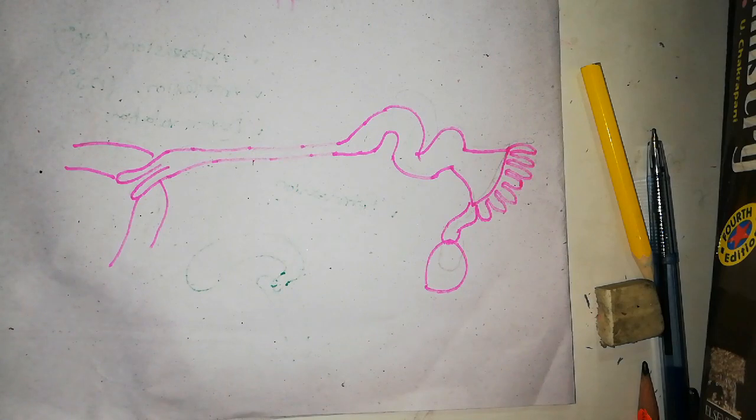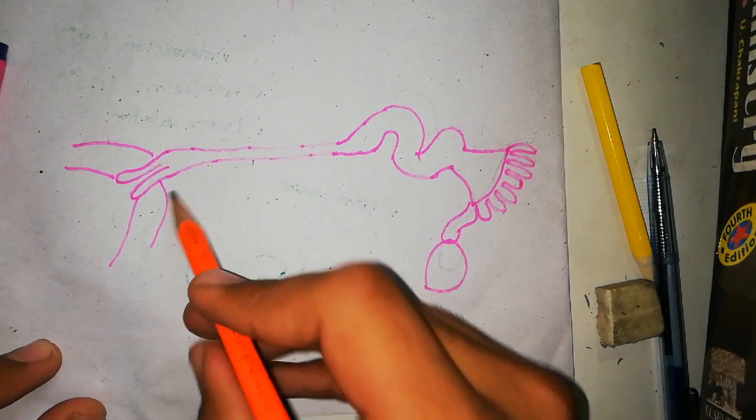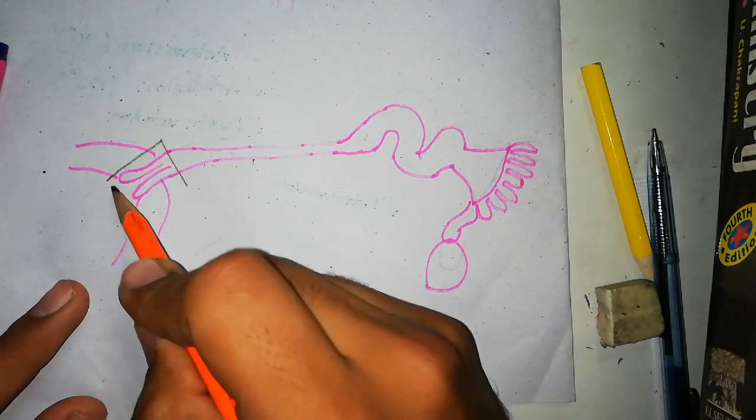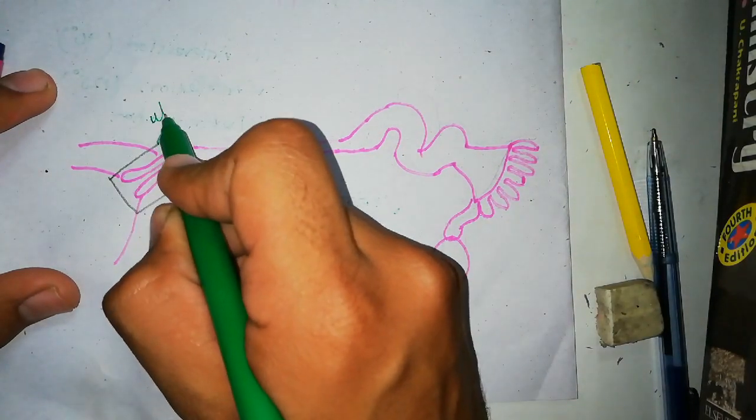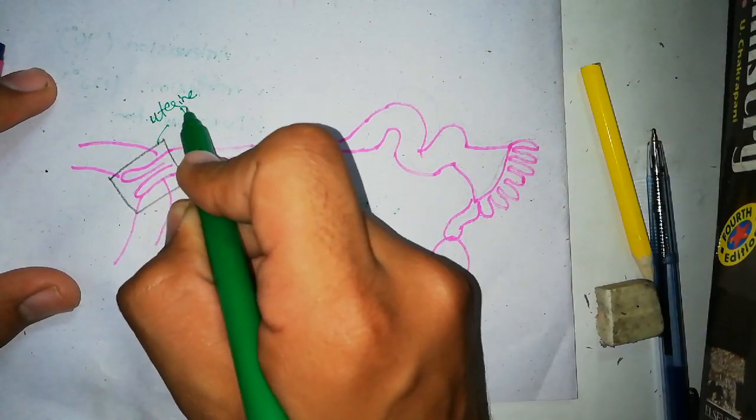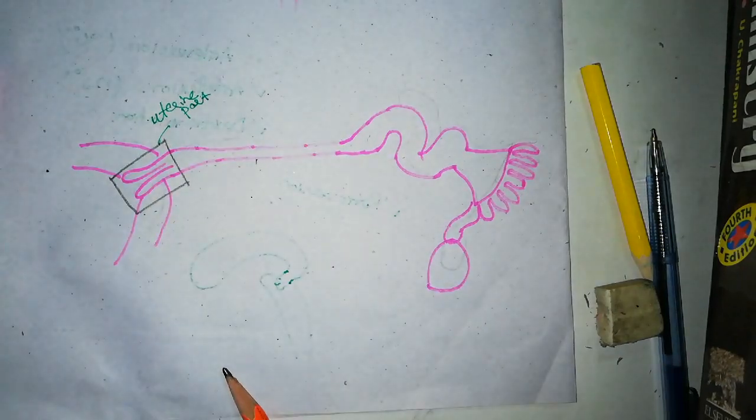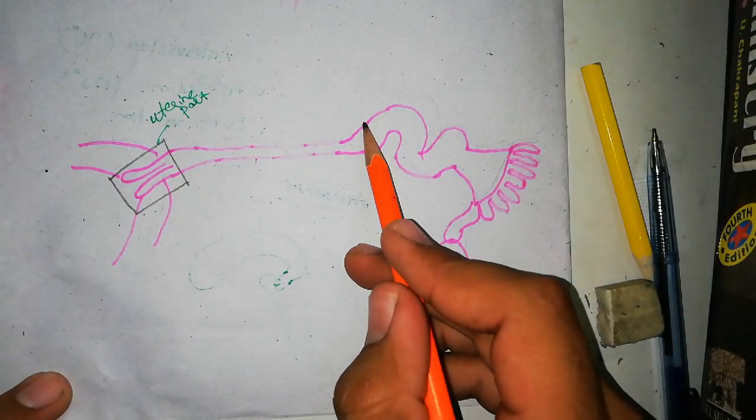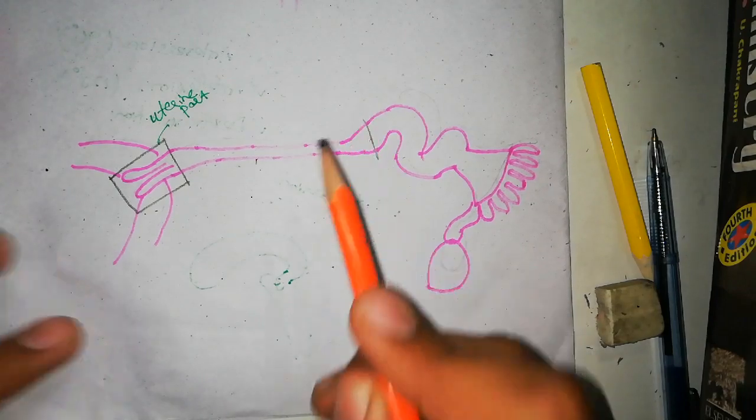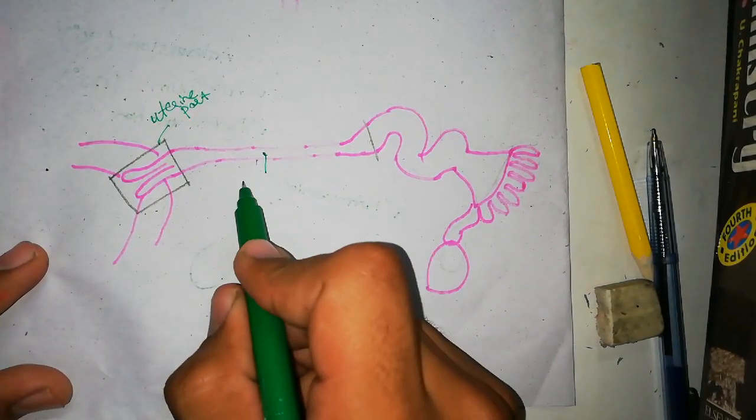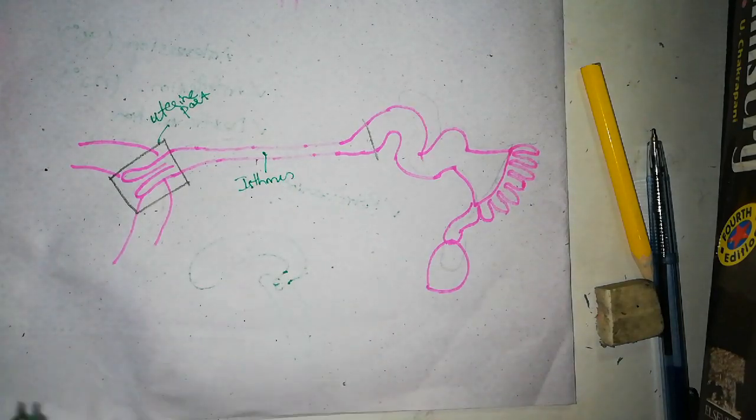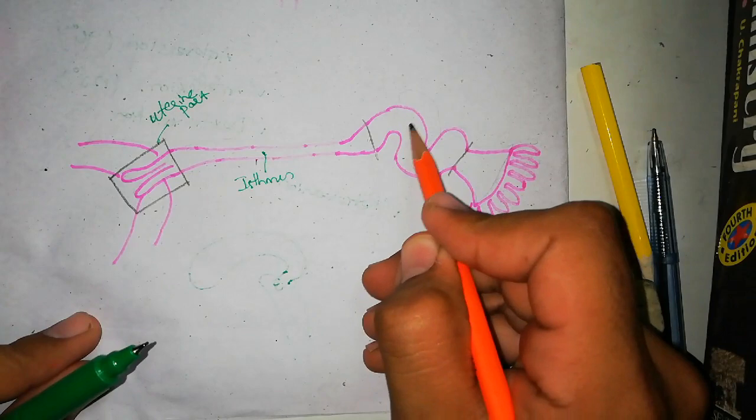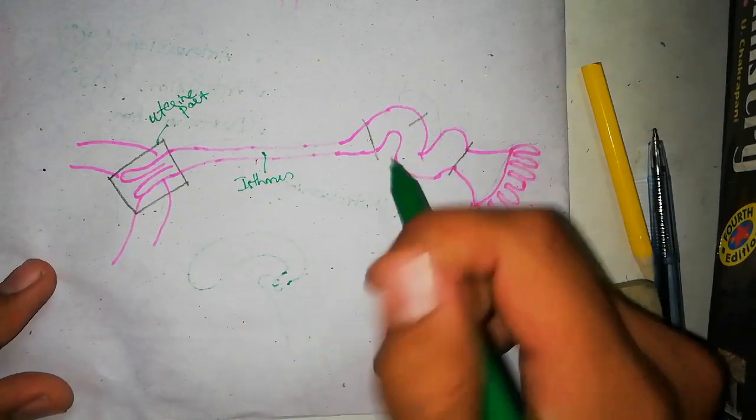Only one fimbria will be long enough that it goes and attaches with the ovary, and this fimbria will be called the ovarian fimbria. That was just an outline. Now we are dividing the fallopian tube. This part inside the uterus will be called the uterine part of the fallopian tube. From the uterine part till the expanded and tortuous part will be the isthmus.